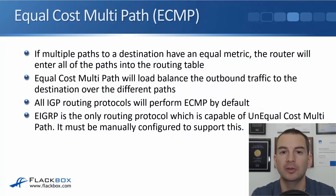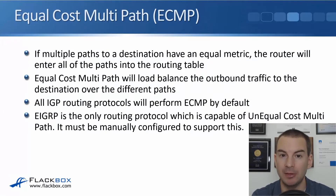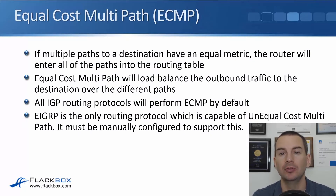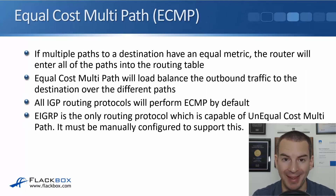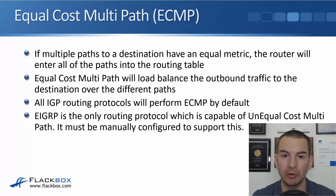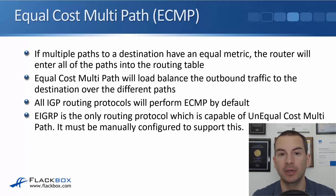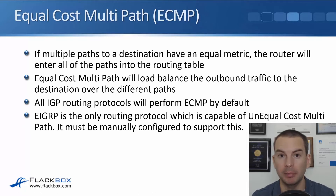In this lecture, you'll learn about Equal Cost Multipath, ECMP. If multiple paths to a destination network have an equal metric, the router will enter all of those paths into the routing table and it will load balance the outbound traffic to that destination network over those available multiple equal cost paths.